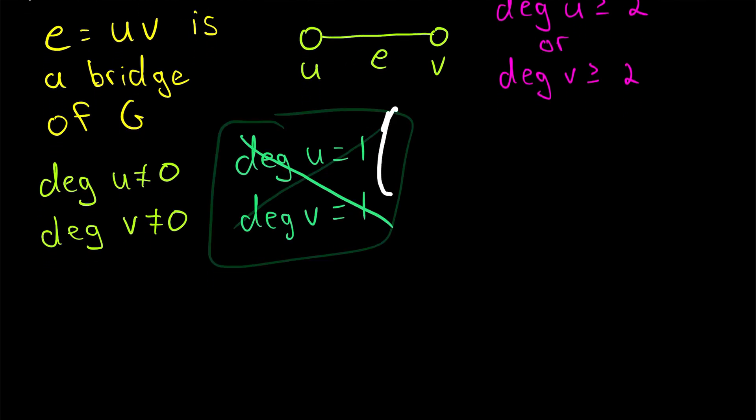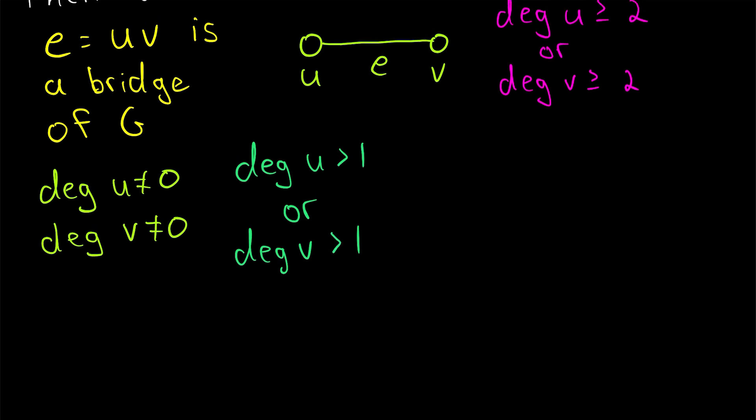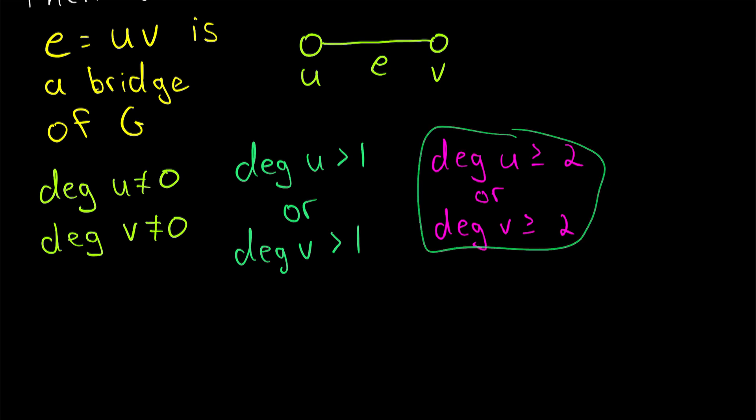and so we know that both U and V cannot have a degree equal to 1. It could be possible that one of these vertices has a degree equal to 1, but they can't both have a degree that's equal to 1, because that would imply the graph is disconnected. Thus, we have that the degree of U is greater than 1, or the degree of V is greater than 1. At least one or the other has to be true. And that's the same as saying that the degree of U is greater than or equal to 2, or the degree of V is greater than or equal to 2.